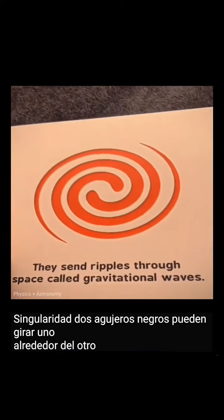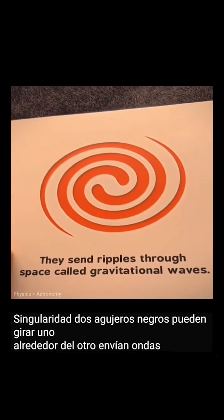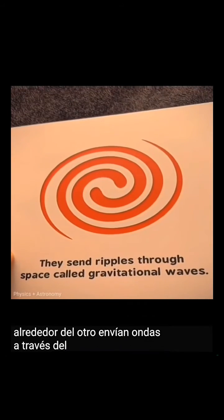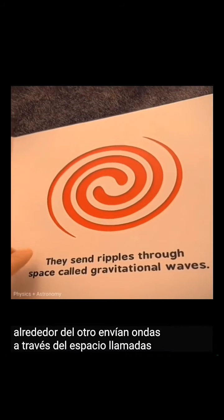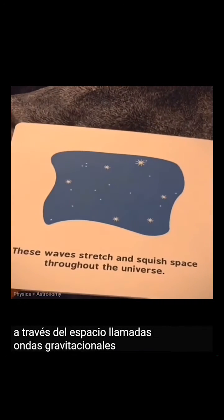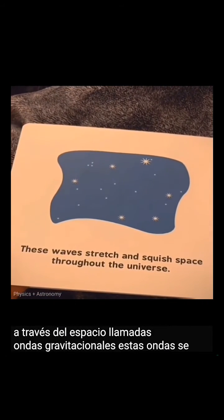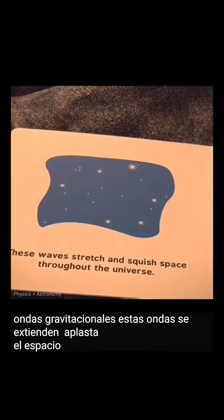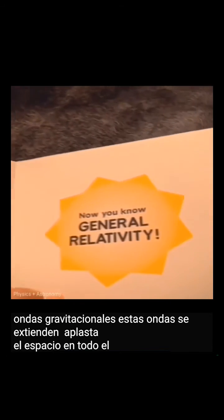Two black holes can spin around each other. They send ripples through space called gravitational waves. These waves stretch and squish space throughout the universe.